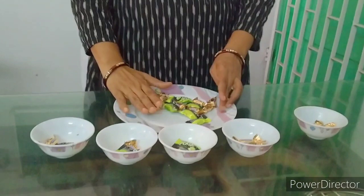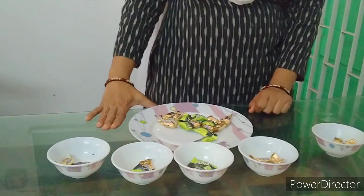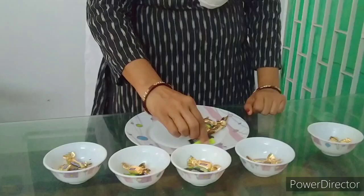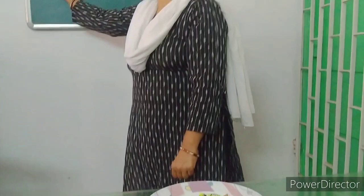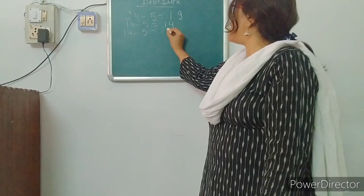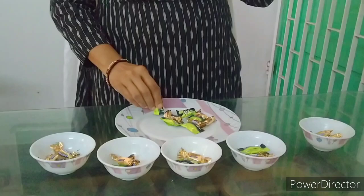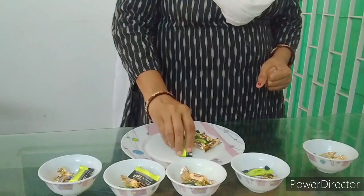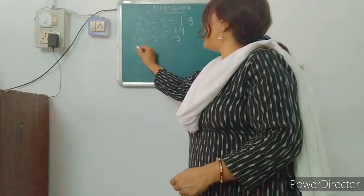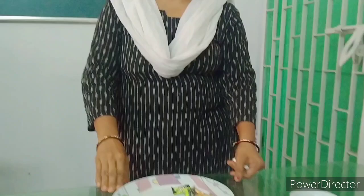14 chocolates are left over. We will try to put 1 more chocolate in each bowl: 1, 2, 3, 4th bowl, 5. In 14, again I minus 5, 14 minus 5, 9 chocolates are there in the plate. Again, I am going to put 1 more chocolate in each bowl. That means in 9 minus 5, 4 chocolates are in the plate.